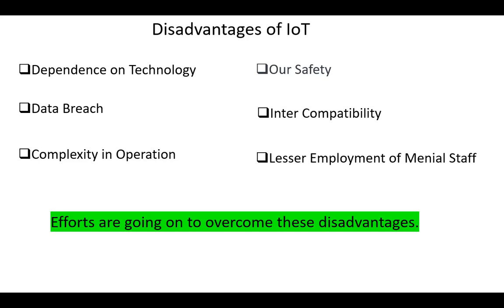Next, our safety. Most of the IoT devices are connected to the internet, and a lot of information is available on the net. It would be very dangerous if private and confidential information is accessed by attackers.